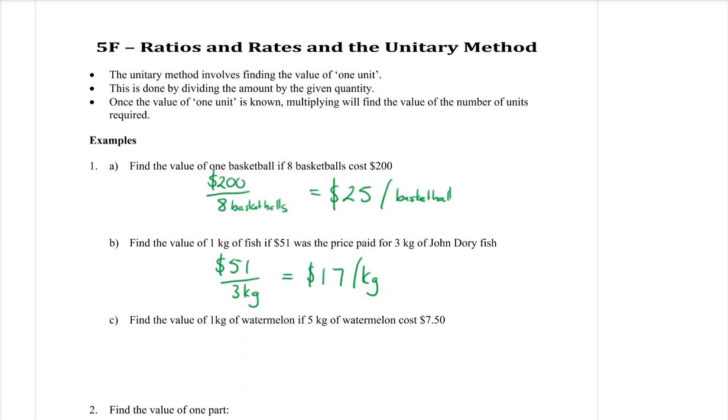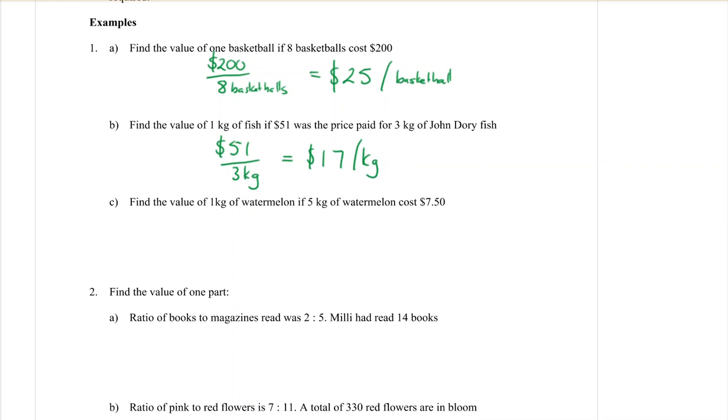Part C, find the value of one kilogram of watermelon if five kilograms cost $7.50. So we take the $7.50, the cost, because we want the cost per kilogram, and we put the kilograms on the bottom. $7.50 divided by 5 is $1.50. We normally put a zero on the end of that because it's money, per kilogram. So that should hopefully be pretty easy. That's exactly what we were doing yesterday.